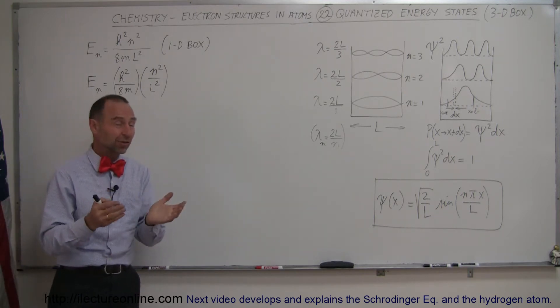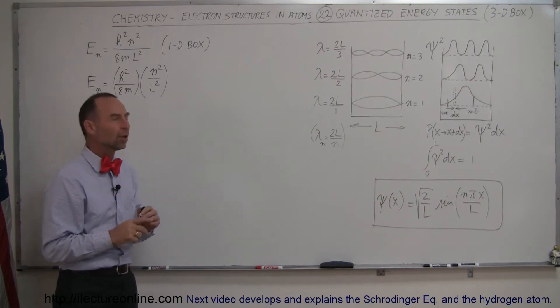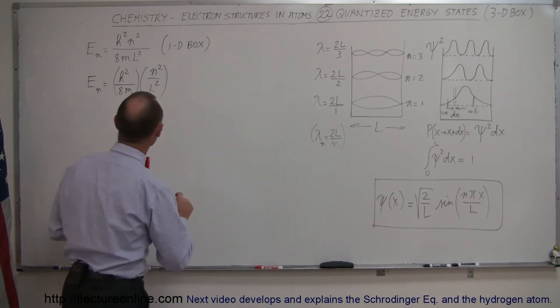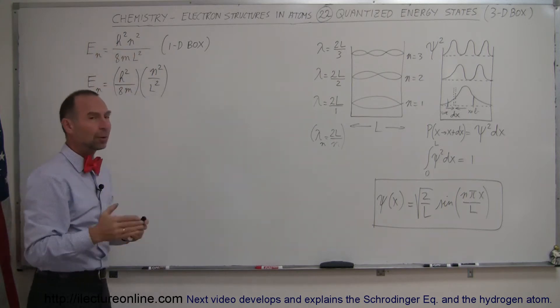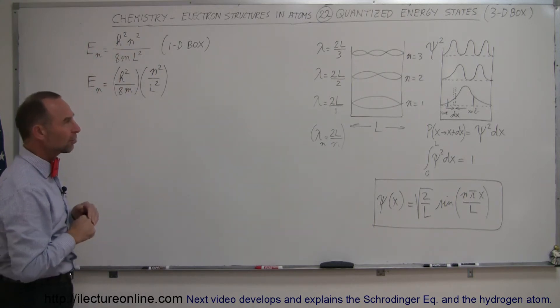So an atom is, of course, not a one-dimensional thing. An atom is a three-dimensional thing. So what we're going to do now is take the equation we derived on the previous video, which is the energy levels for a one-dimensional box, and we're going to expand that to a three-dimensional box.